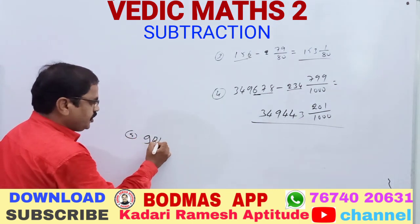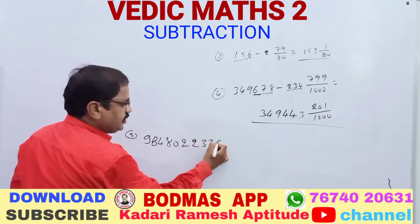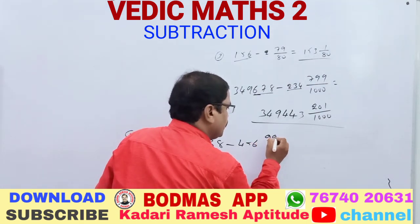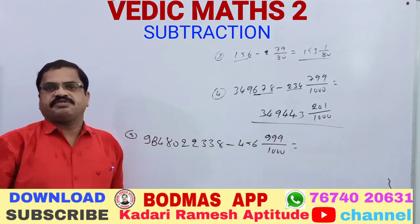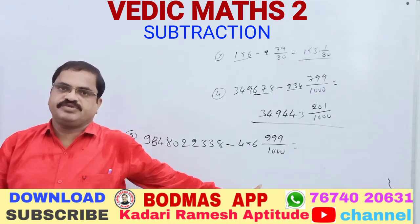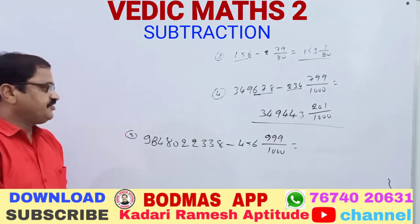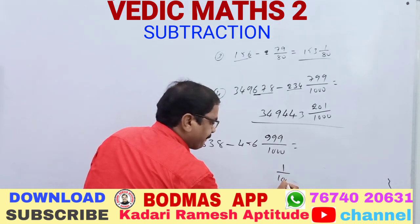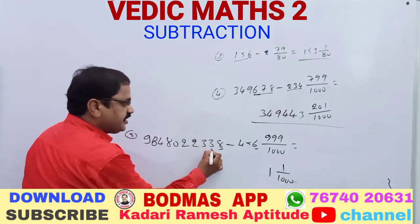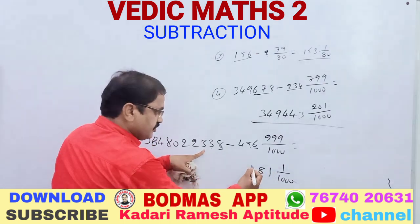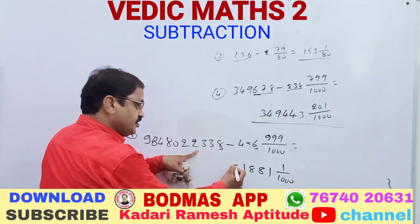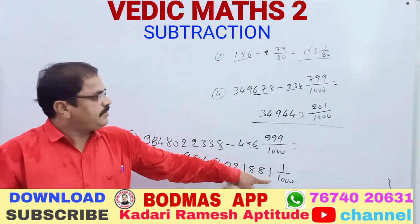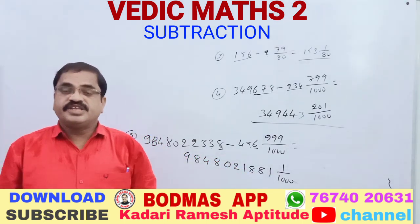Question number 5: 98,480,223,8 minus 4,567,456 and 999/1000. A very big number - no problem, we can solve this in 2 seconds. The difference from 1000 is 1, so write 1/1000. Then: 8 minus 6 is 2, subtract 1 giving 1; then working through each digit position: 30 minus 5 gives 8, 12 minus 4 gives 8, continuing through to get the answer 9,848,021,881 by 1000.